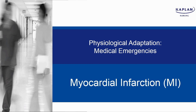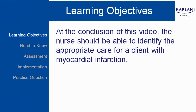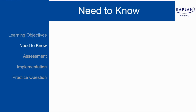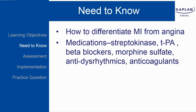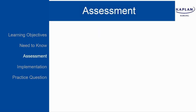I'm going to be discussing care of the client with a myocardial infarction. At the conclusion of this video, the nurse should be able to identify the appropriate care for a client with myocardial infarction. In order to give appropriate care, the nurse needs to know how to differentiate an MI from angina and must know medications: streptokinase, TPA, beta blockers, morphine sulfate, anti-dysrhythmics, and anticoagulants. I'm going to start with assessment.